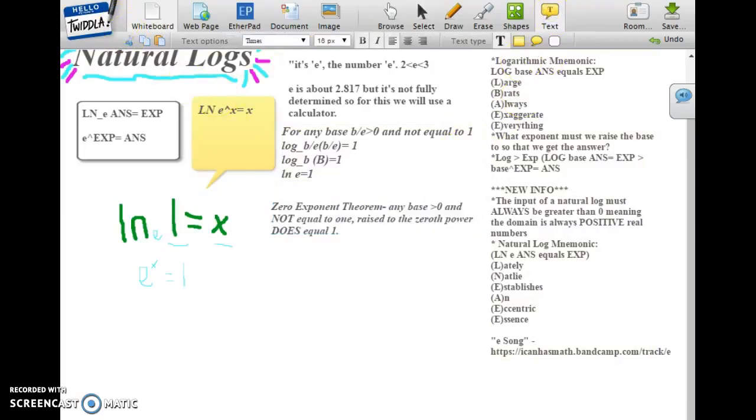Since e is greater than zero and e is not equal to one, because we said e is between, is greater than two less than three, it pertains to this theorem. Therefore, the natural log of e equals one.